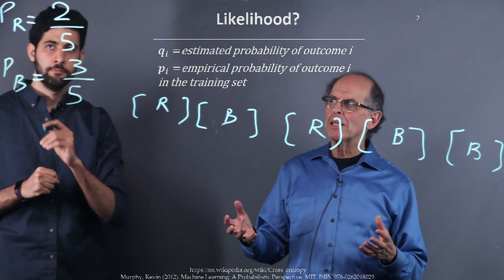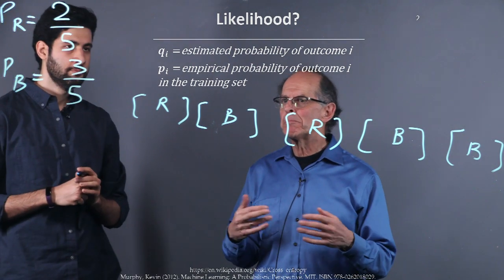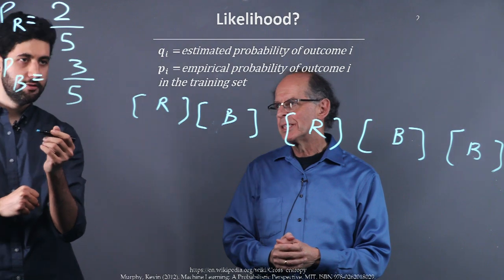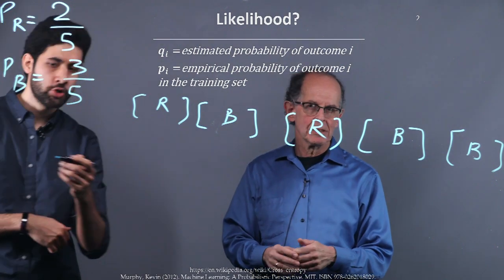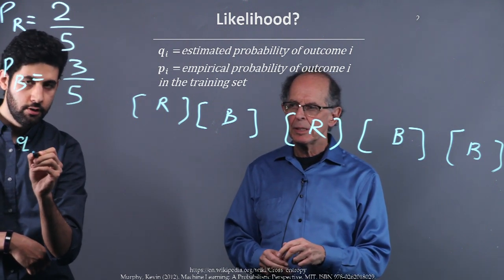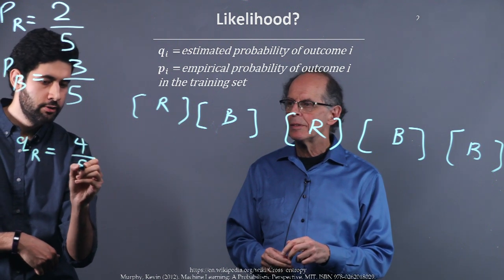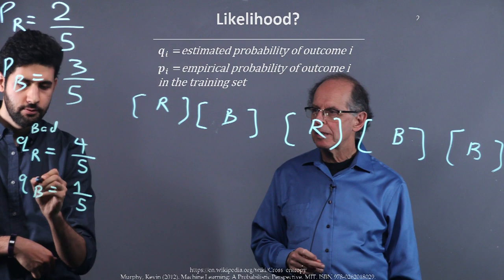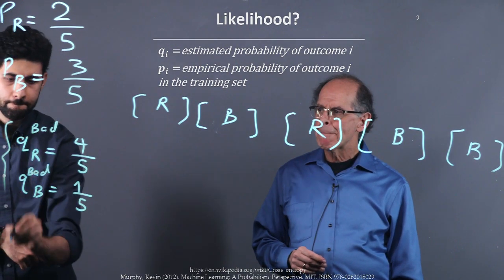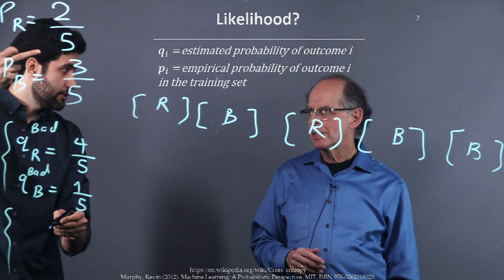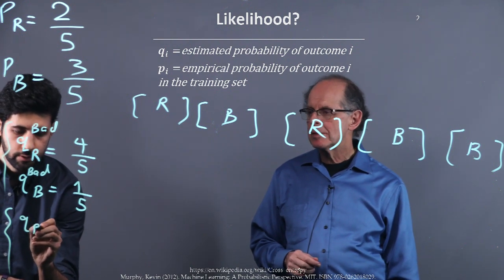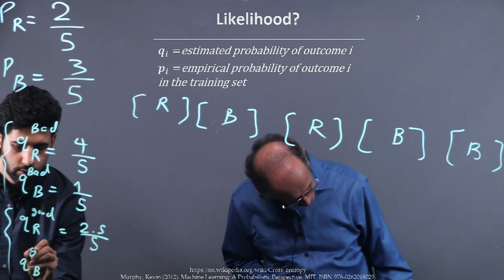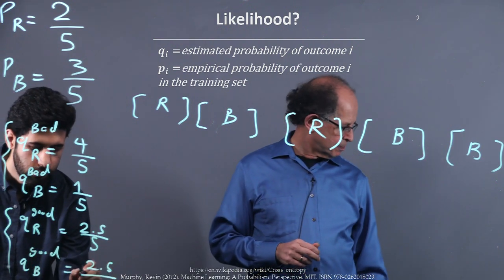If we somehow make a measure of this, what would the likelihood be? We're just going to multiply the probabilities all together. So basically, let's say we have a guess about this distribution. A bad guess is something like Q of red is four over five, and Q of blue is one over five.